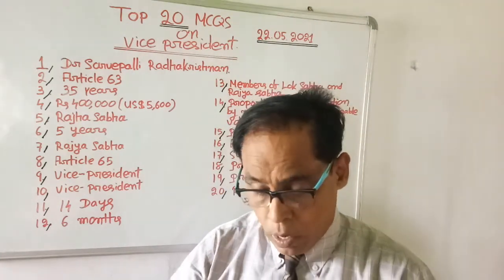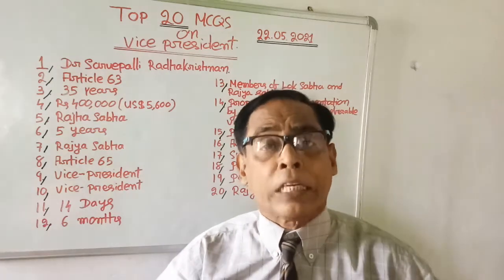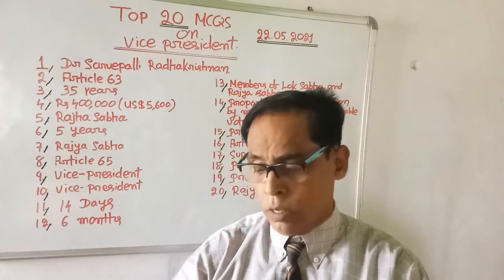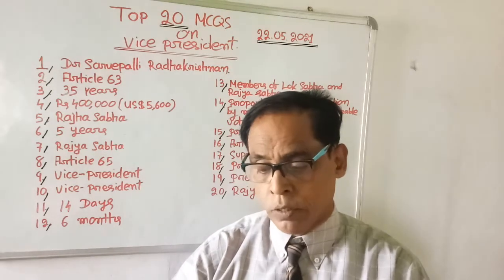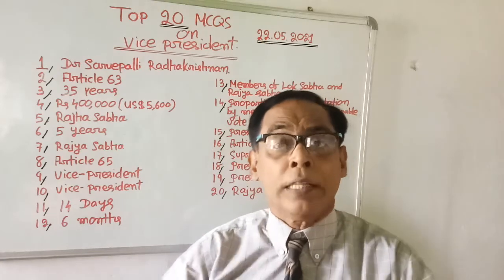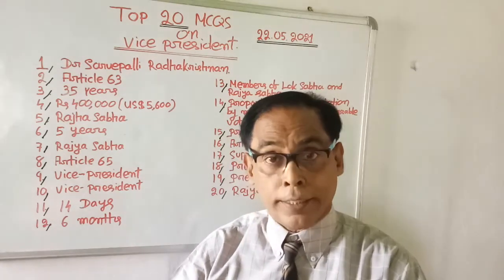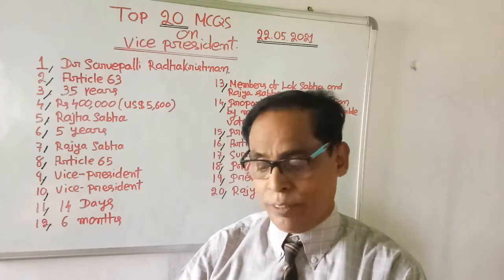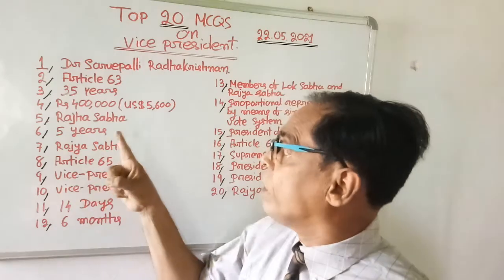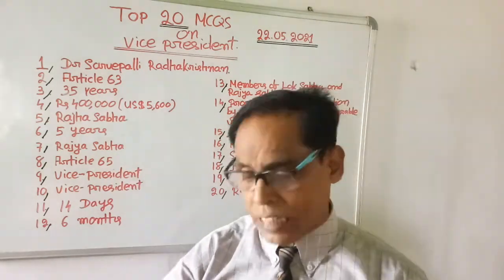Question number six: What is the term of the Vice President? Choices are six years, five years, four years, and three years. The right answer is five years.